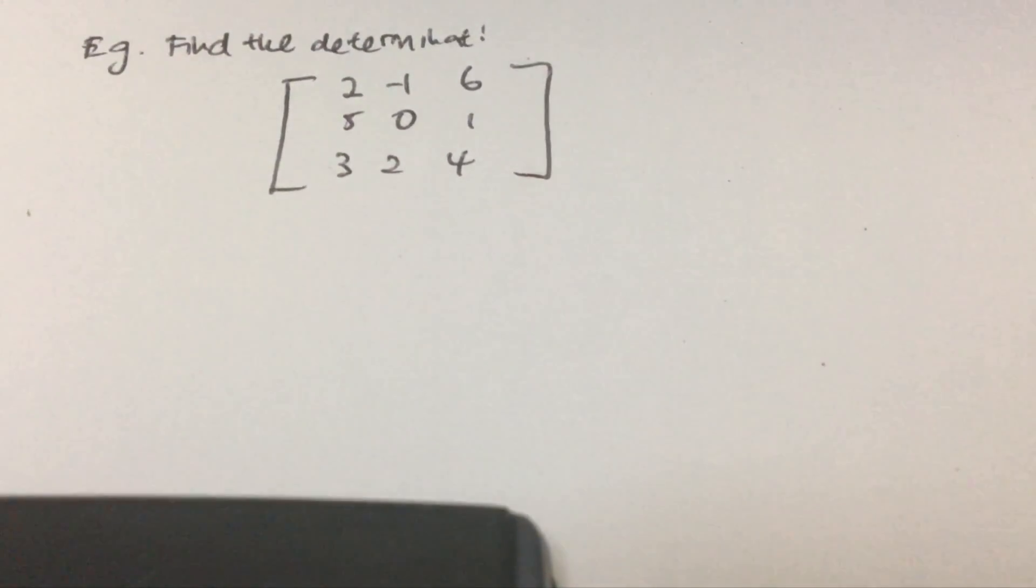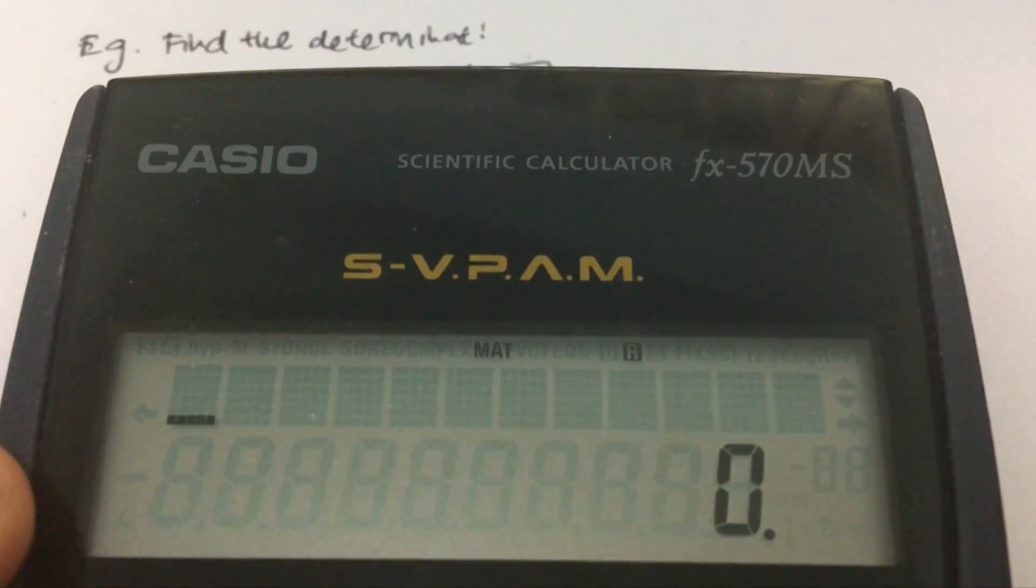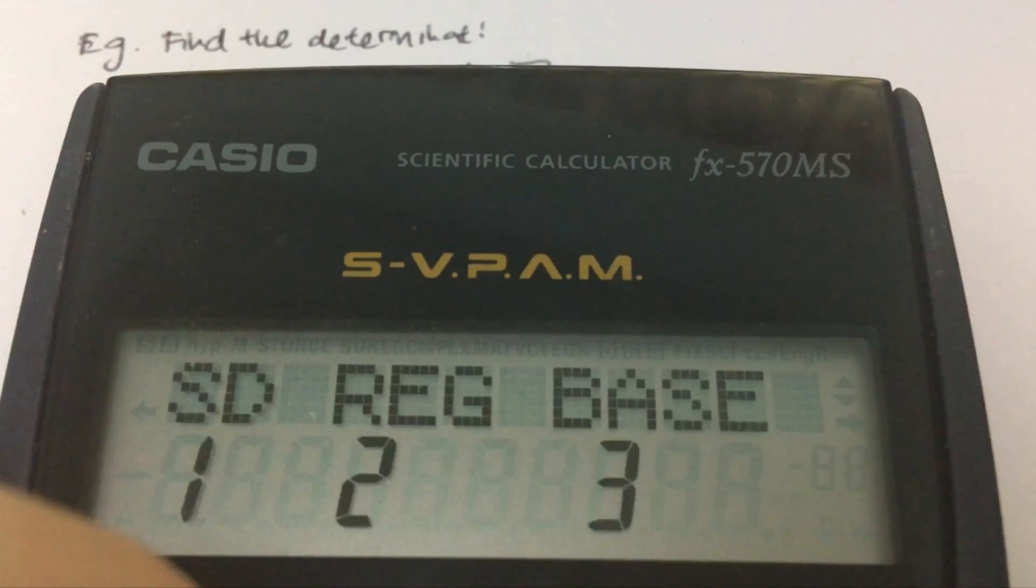So first thing what you have to do, before you even start everything, is you have to switch your calculator into the matrix mode. So how do you do that? You have to press mode twice, or three times,